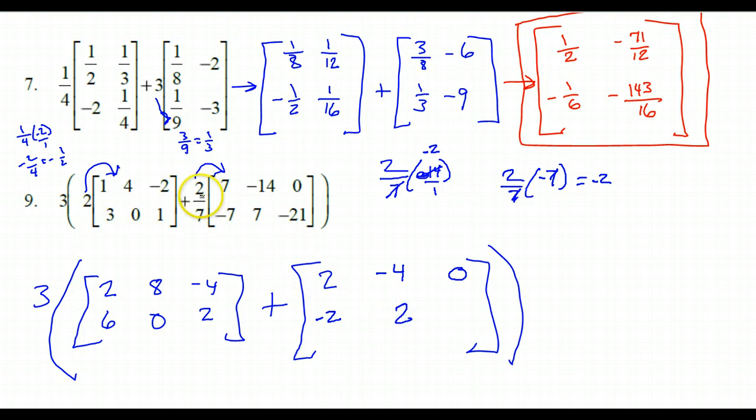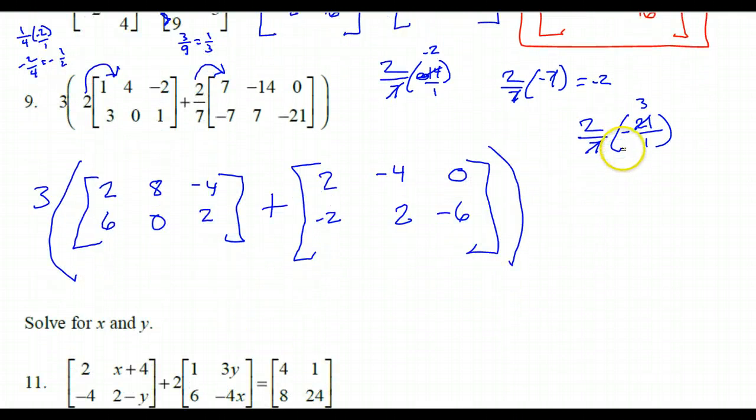2 seventh times 0 is 0. 2 seventh times negative 7, those 7's cancel out, so that'll be negative 2. And then 2 seventh times 7 is just 2. And then finally, 2 seventh times negative 21, 7 goes into 21 3 times. So it's really 2 times negative 3, so that's going to be negative 6. So now I could add these two matrices together.